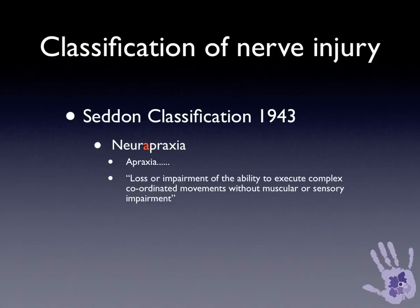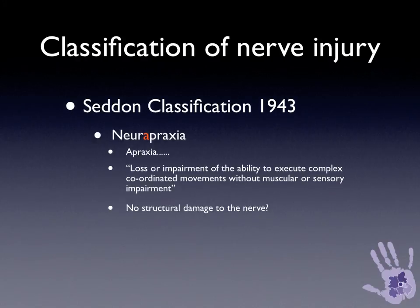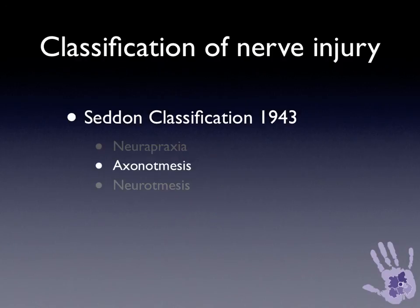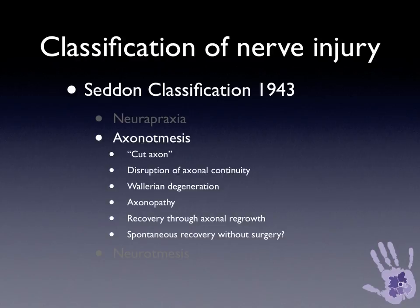Regarding neuropraxia: apraxia means the loss or impairment of the ability to execute complex coordinated movements without muscular or sensory impairment, implying there is no structural damage to the nerve. However, this is not an appropriate term to use in our modern understanding of peripheral nerve injury. Axonotmesis implies a cut axon — a loss of axonal continuity with subsequent Wallerian degeneration, what is often termed axonopathy or degenerative axonopathy — and recovery can only occur through axonal regrowth.